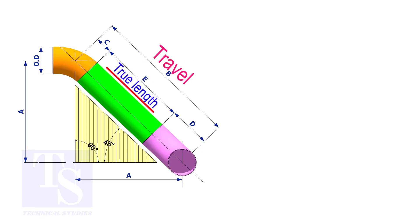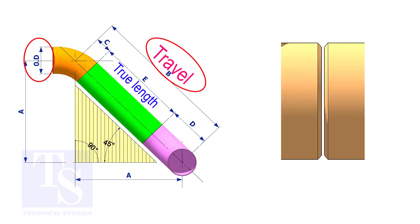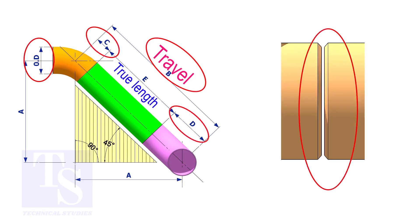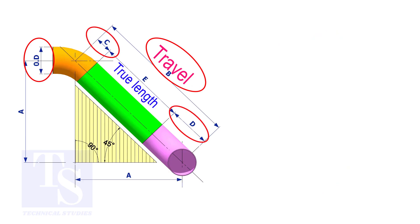To calculate the true length or the cut length, we need to know the travel length, the diameter of the pipe, the joint gap, and the elbow center. The elbow center is sometimes called the takeoff length.